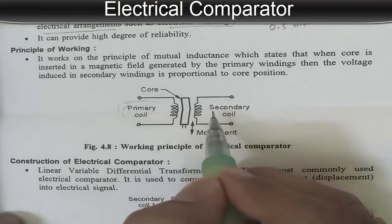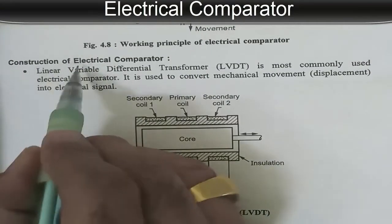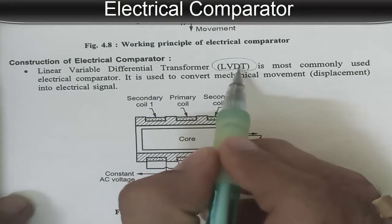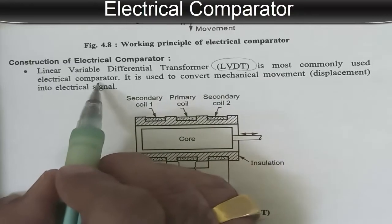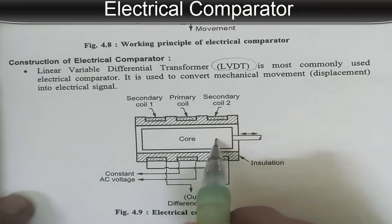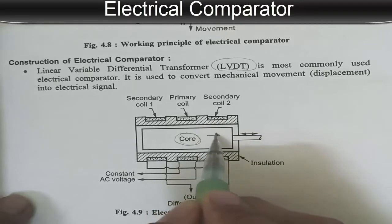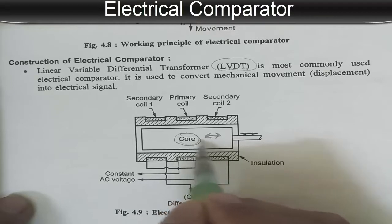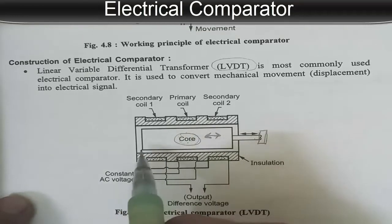This is the principle of working of an electrical comparator. Now let us see the construction. LVDT — Linear Variable Differential Transducer, or transformer — is most commonly used as an electrical comparator. It is used to convert the mechanical movement of the core into an electrical signal. When the core has some movement, it converts it into an electrical signal, and we can easily determine the movement of this core.